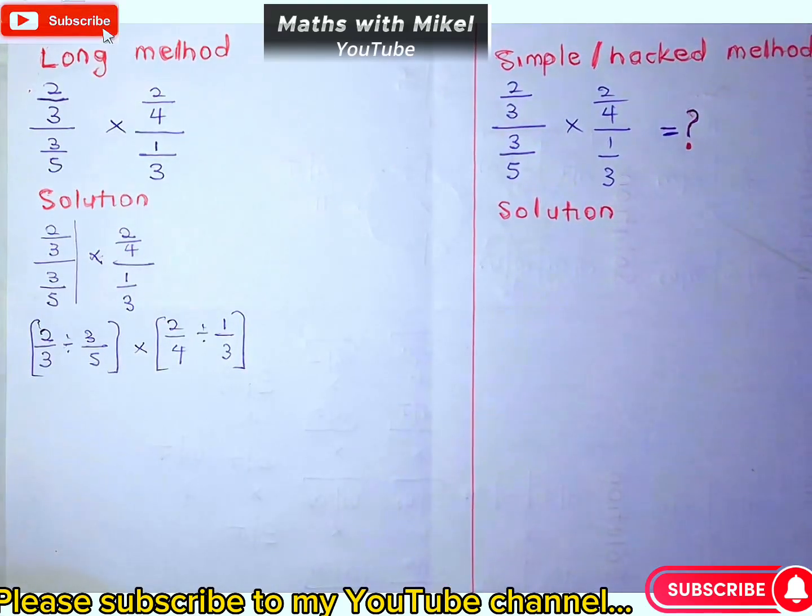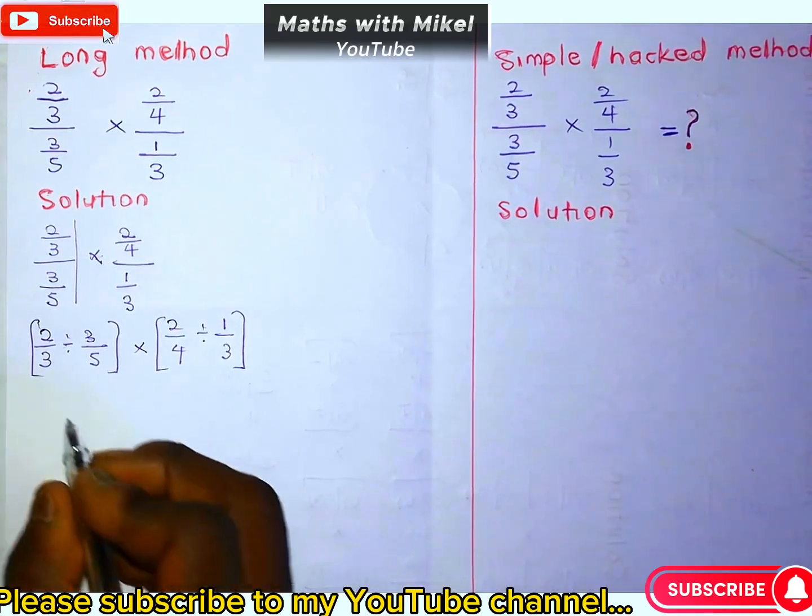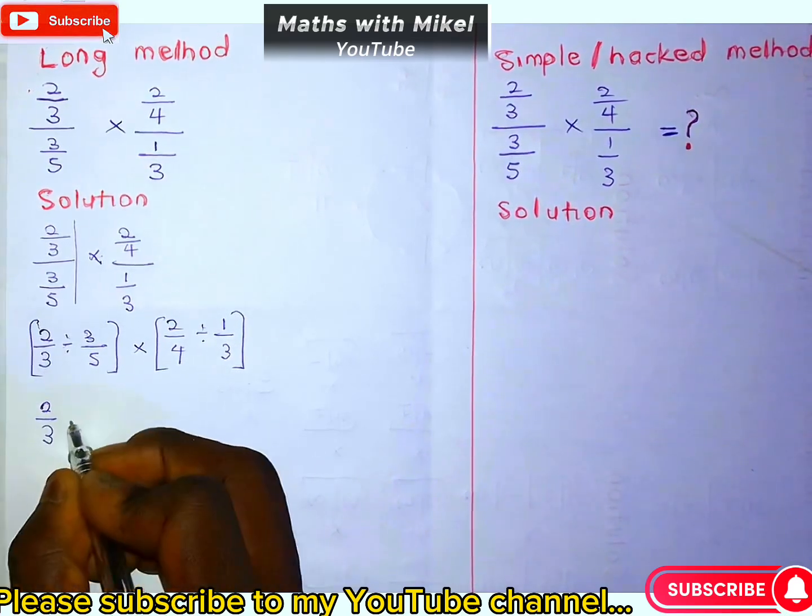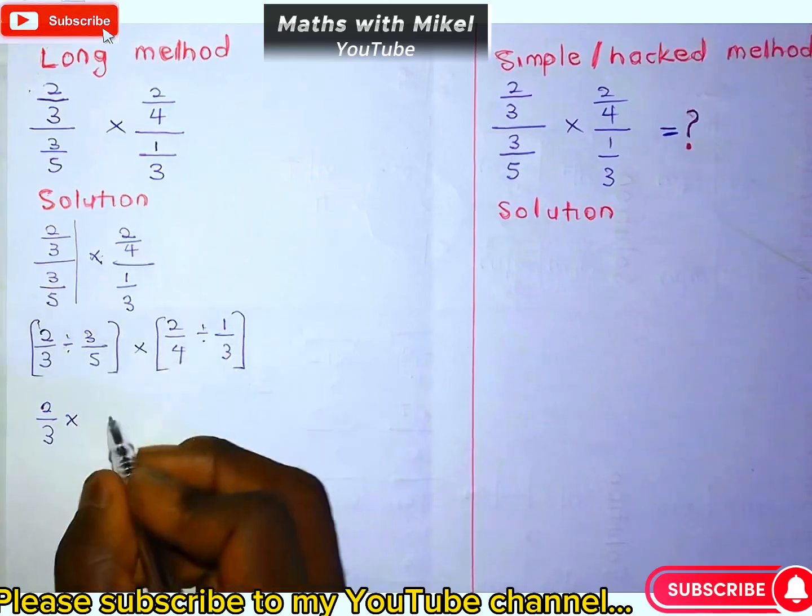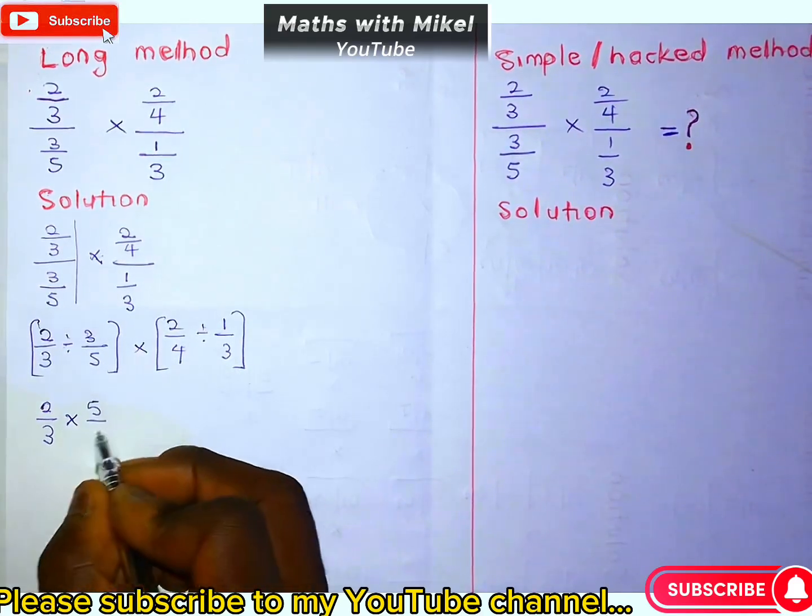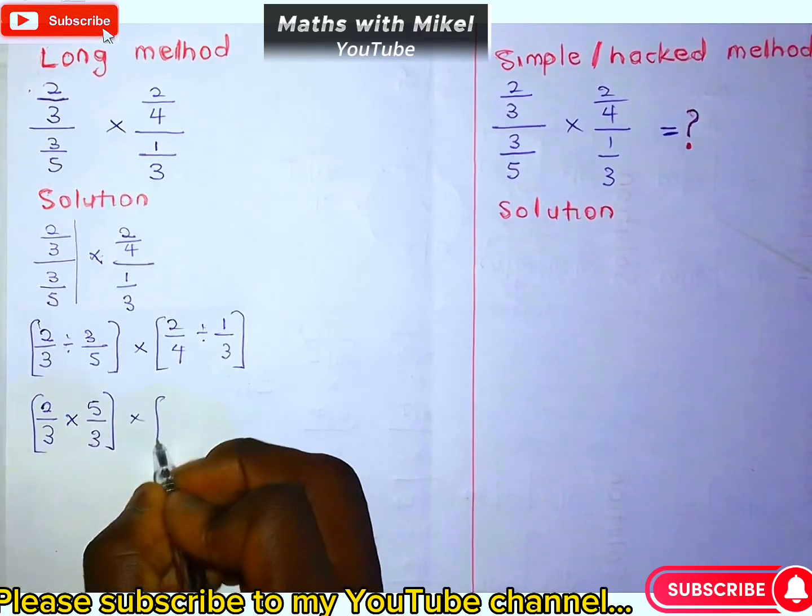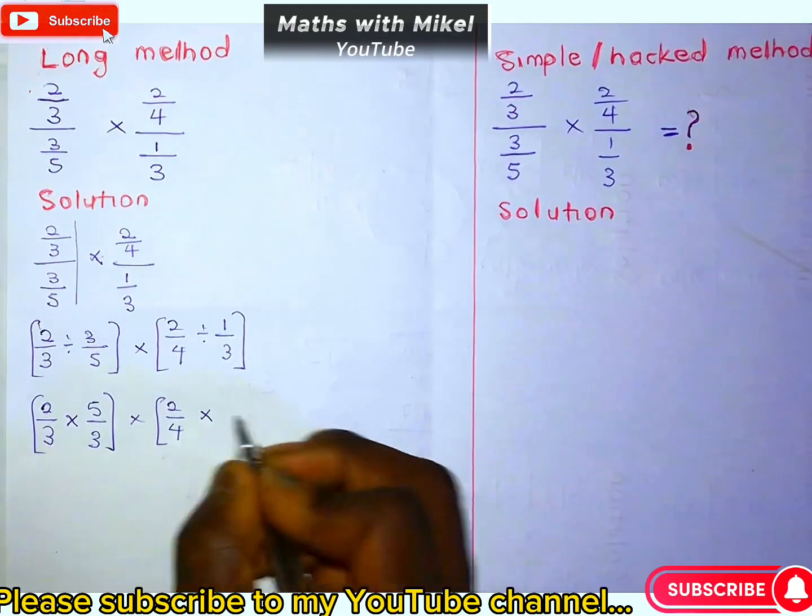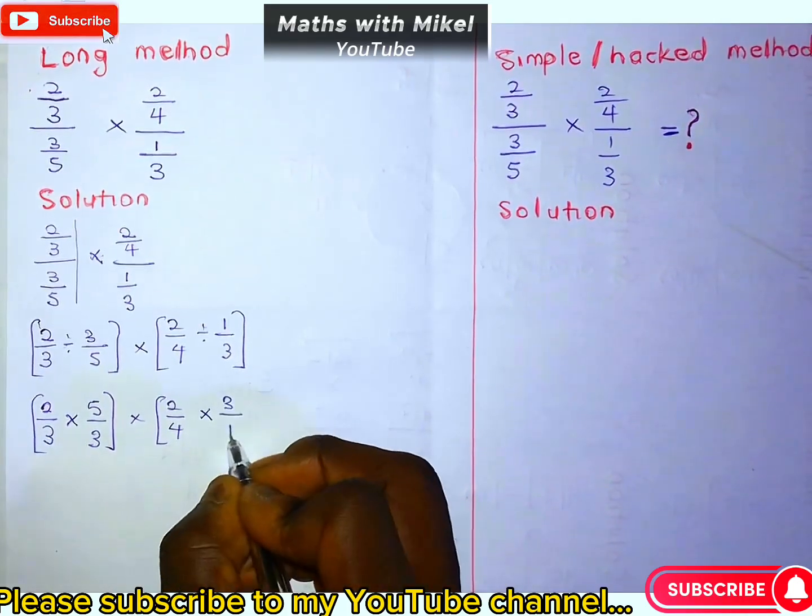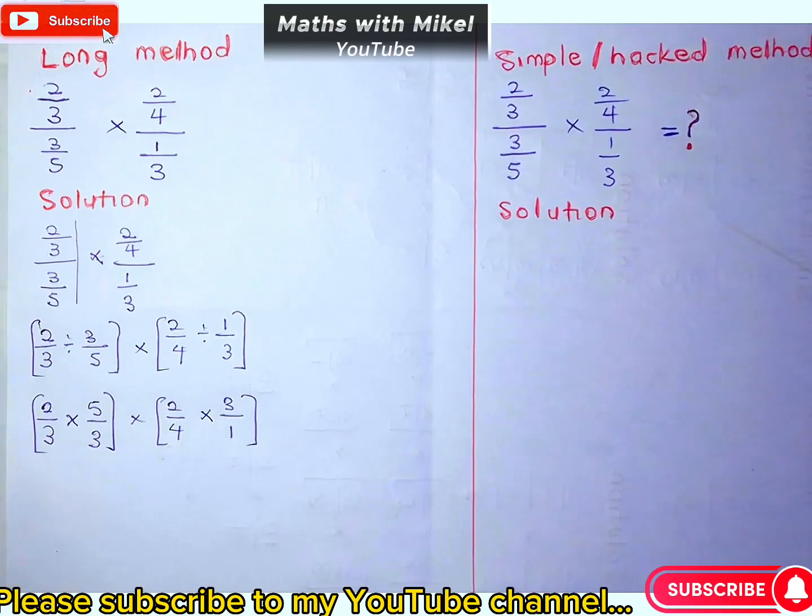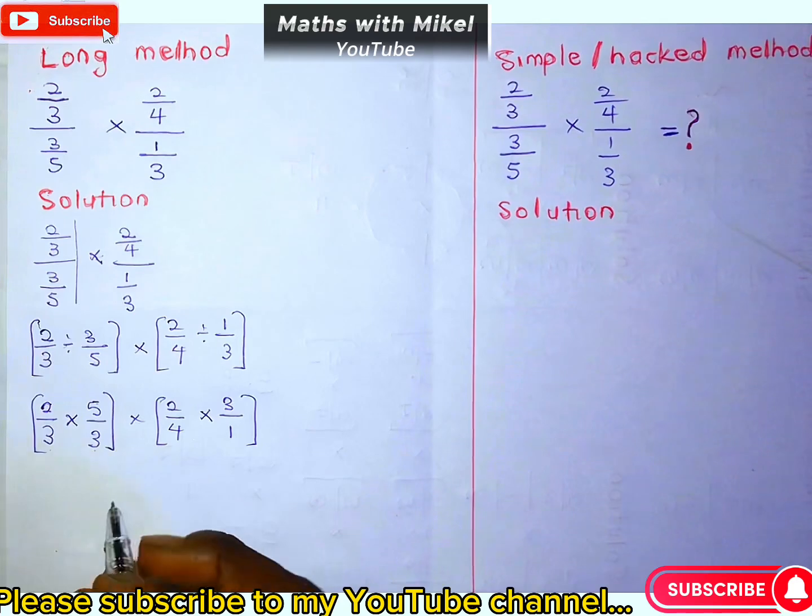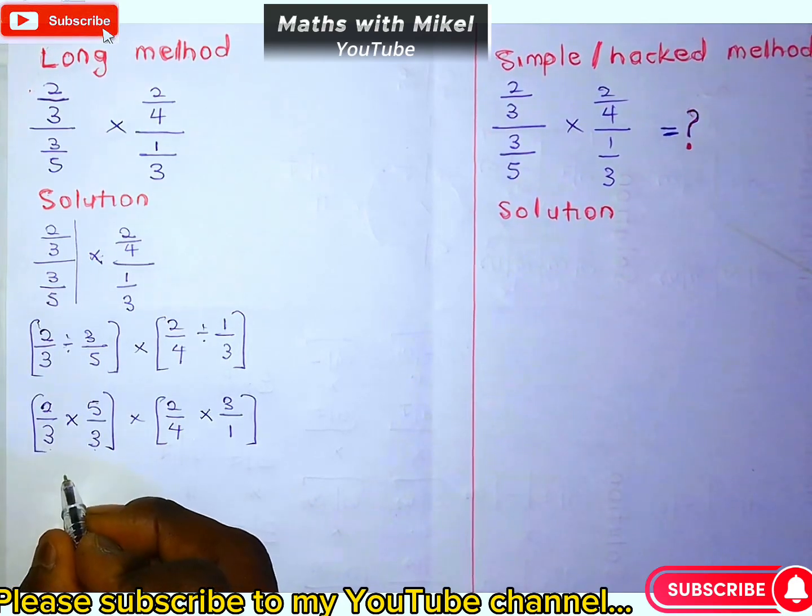Now since this is division, we can reciprocate the right-hand side, so I get 2 over 3 times 5 over 3. When we change to multiplication, numerator multiplies numerator, and denominator multiplies denominator.